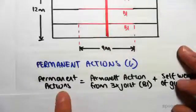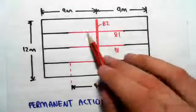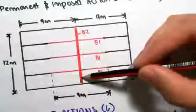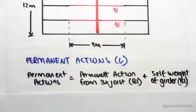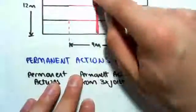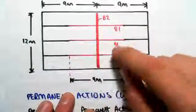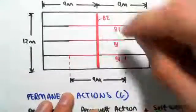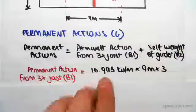The permanent action in the girder comes from three joists plus the self weight of the actual girder itself. I hope you're starting to understand the load pattern — we first found the loading in the slab, which was transferred into the joists, and now the loading in the joists is being transferred to the beam. So it flows from area slab, to joists, and now these joists are going into this girder.